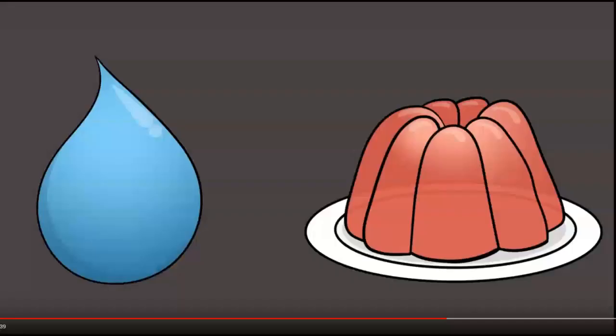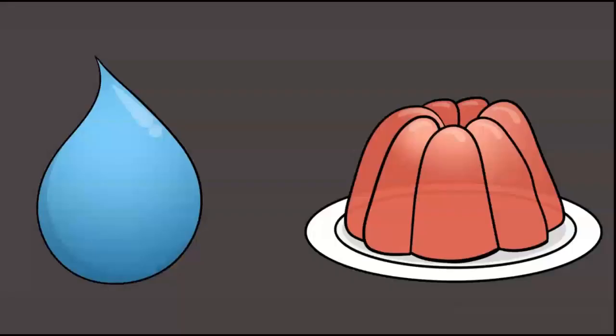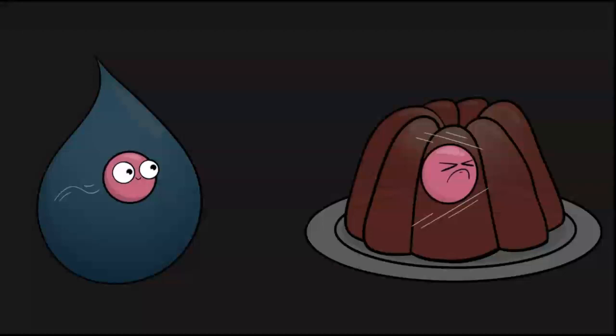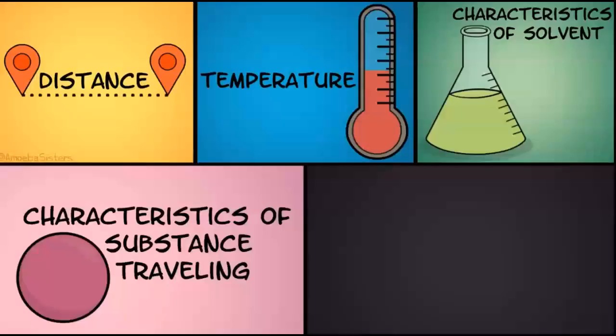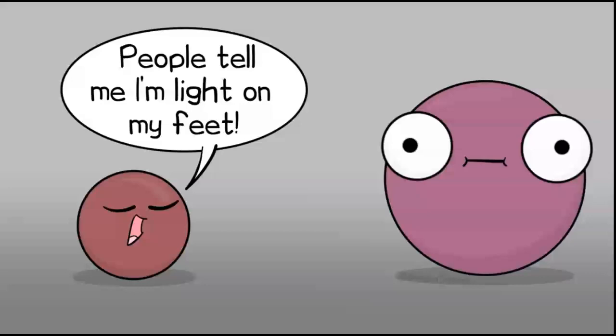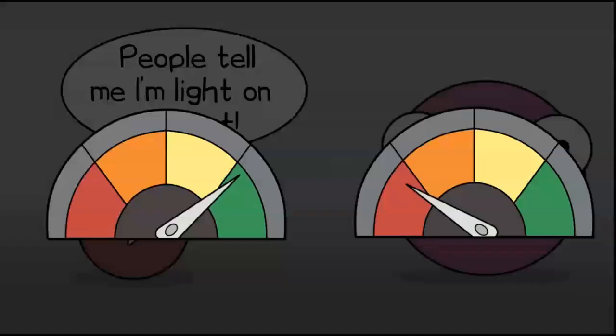The solvent: for example, is the solvent very dense? That could slow the molecules down and decrease the diffusion rate. Characteristics of the molecules — what is the mass of the substance traveling? Generally a substance with greater mass will have a lower diffusion rate when compared to a substance with less mass.